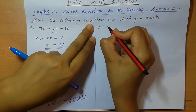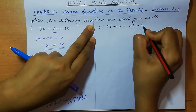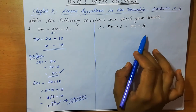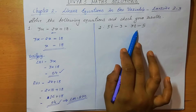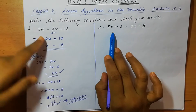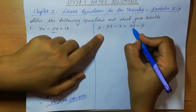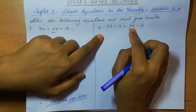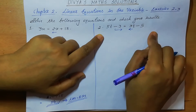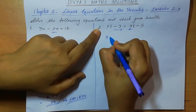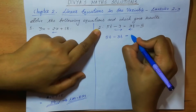Question number 2: 5t minus 3 = 3t minus 5. Here we are going to find the value of variable t. We write the variables on one side and numbers on the other. Shifting 3t to the left gives minus 3t, and shifting minus 3 to the right gives plus 3. So we have 5t minus 3t = minus 5 plus 3.